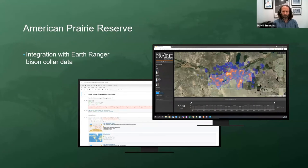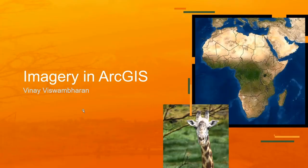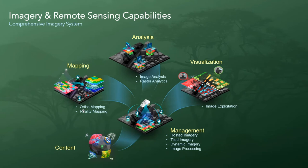Next, Vinay Vishwamaran, principal product manager on the imagery team at Esri, presents ArcGIS imagery and remote sensing capabilities. When discussing imagery in ArcGIS, we're talking about a massive category of functionality spanning multiple pieces of interrelated software. All functionality can be divided into five sub-capabilities: content, image management, image mapping, image analysis, and visualization and exploitation.